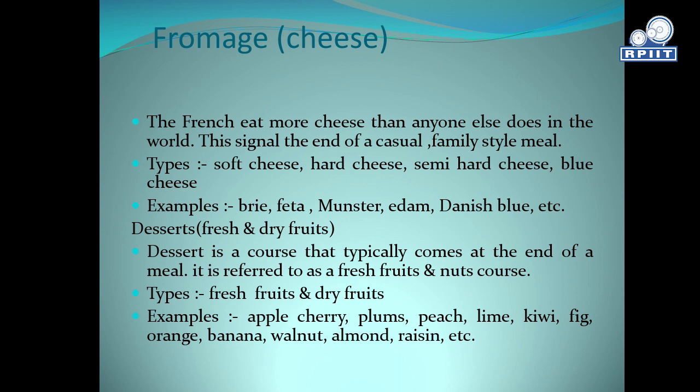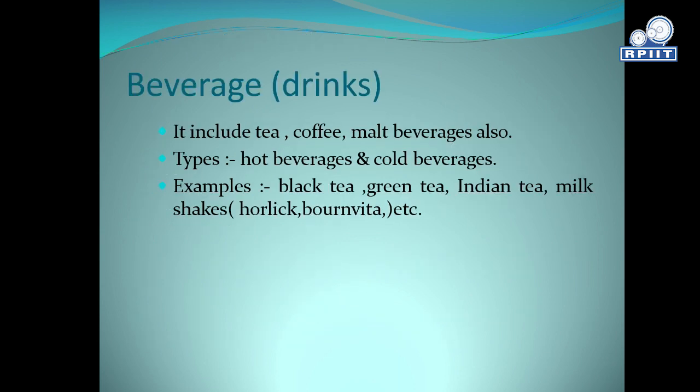Dessert. Fresh and dry fruits. Dessert is a course that typically comes at the end of the meal. It refers to fresh fruits and nuts. Types include fresh fruits and dry fruits. Examples include apple, cherry, plum, kiwi, fig, walnut, almond, raisin, etc.